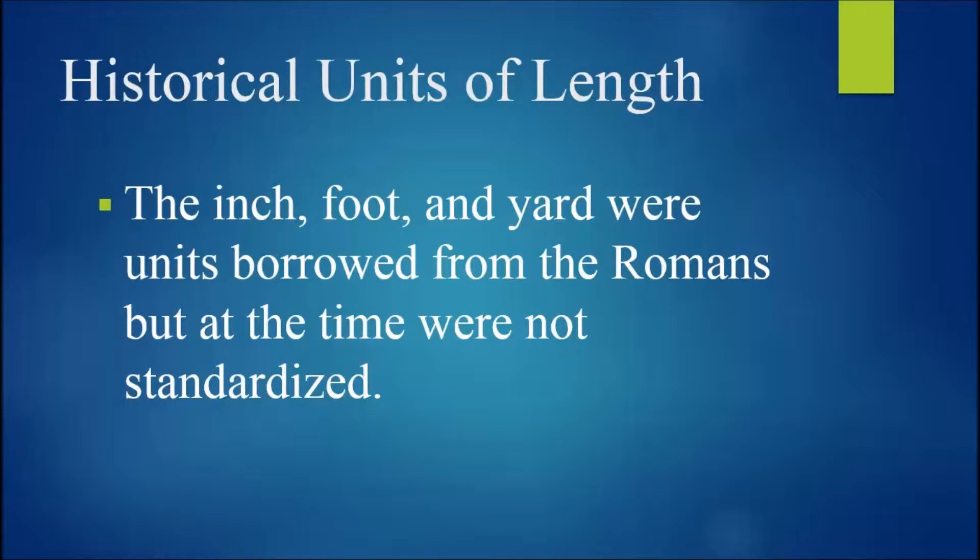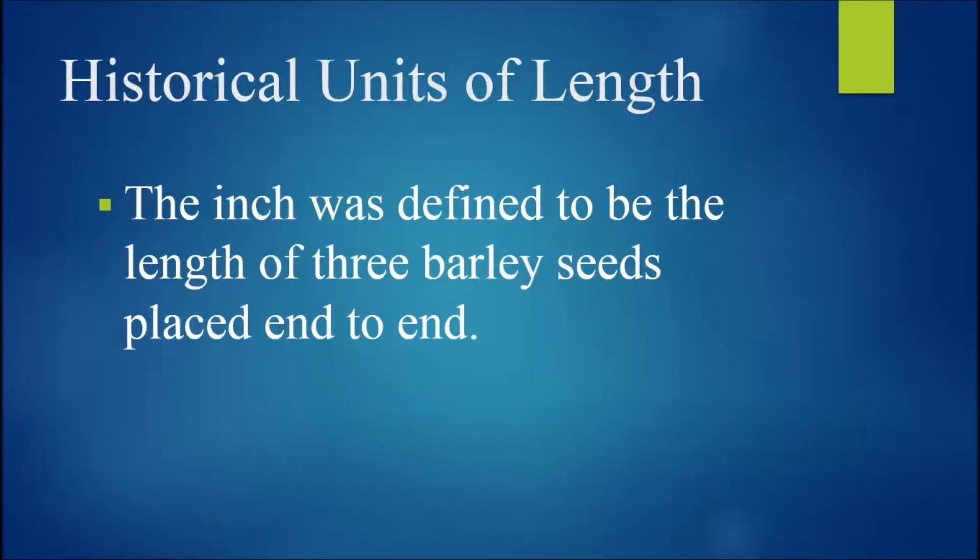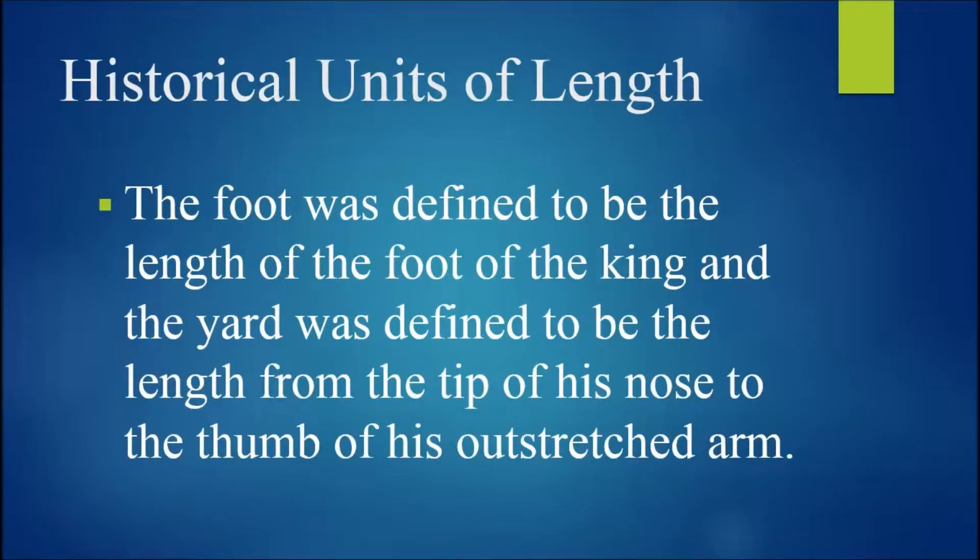Now it's both interesting and fun to consider some of the historical definitions for units. The inch, foot, and yard were borrowed from the Romans, but at that time were not standardized. The inch was defined to be the length of three barley seeds placed end to end. And the foot was defined to be the length of the foot of the king, while the yard was defined to be the length from the tip of his nose to the thumb of his outstretched arm. Now, notice that these units changed depending on who happened to be king in the case of the foot and the yard, or what particular barley seeds you happened to have in the case of the inch.